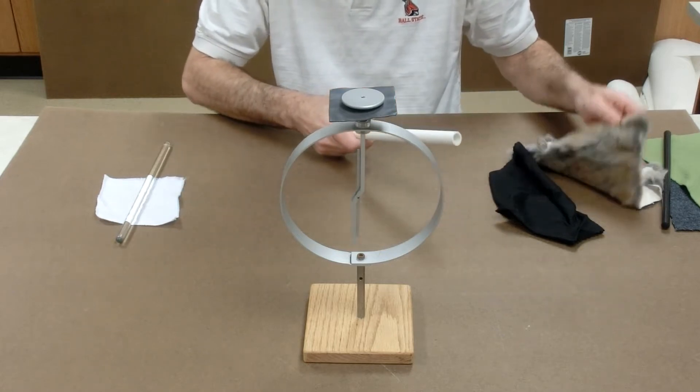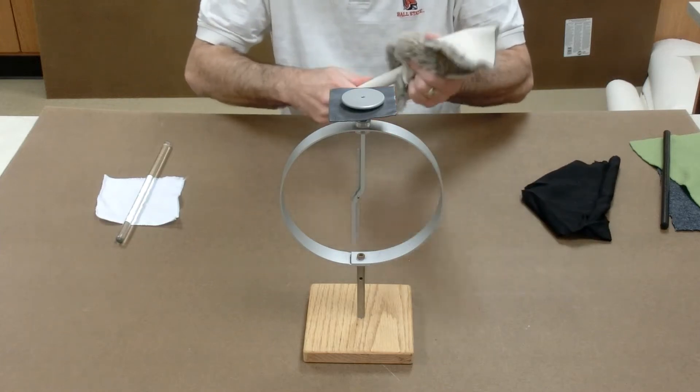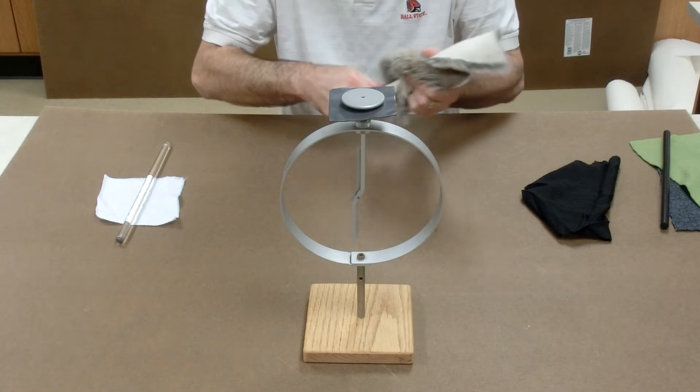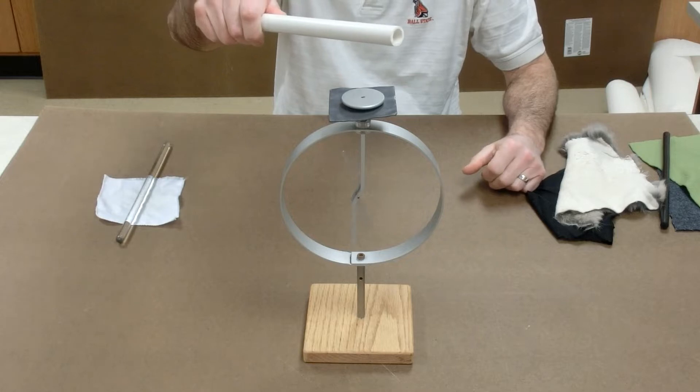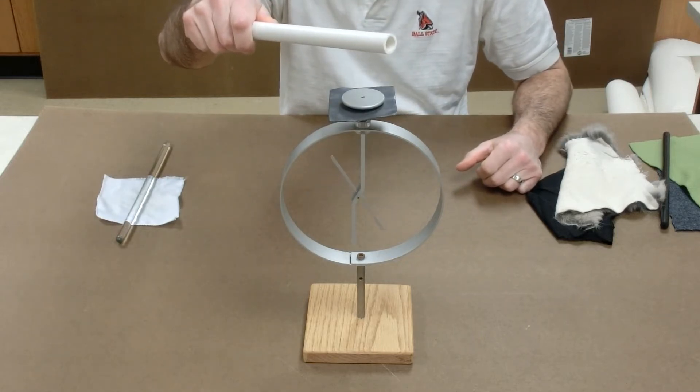Here's how this works with a negatively charged PVC pipe. I rub the PVC pipe with fur. The PVC pipe picks up electrons from the fur and becomes negatively charged. When I hold the rod above the electroscope, electrons are repelled away from the rod.